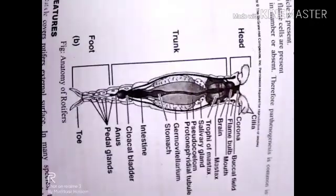The anterior end has a ciliated organ called a corona. The posterior end has toes and adhesive glands. A bulb cuticle is present. Protonephridia with flame cells are also present. Males are reduced in number or absent, and therefore parthenogenesis is common in them.